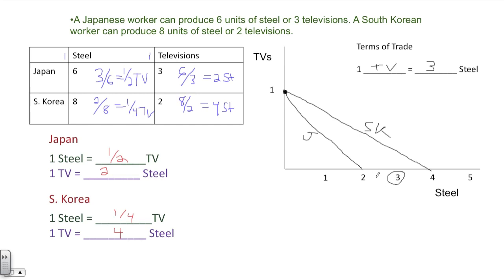Now it could have been 2.25 steel or 3.75 steel, but three falls in between the two so it makes it nice and clean. The logic behind this is that Japan, when they focus on producing televisions and trade one, must gain profit.